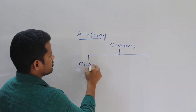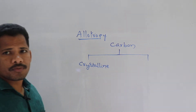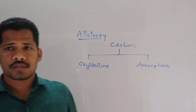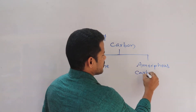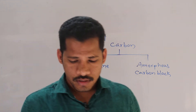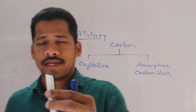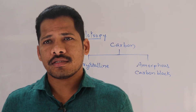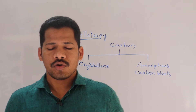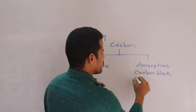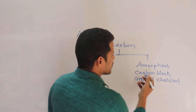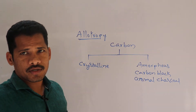One is crystalline allotropes and one is amorphous allotropes. Carbon black is an amorphous allotrope — it is especially used in xerox machines as a black powder, to make ink. For black color we use carbon black. Animal charcoal and coconut charcoal are also amorphous forms of carbon.